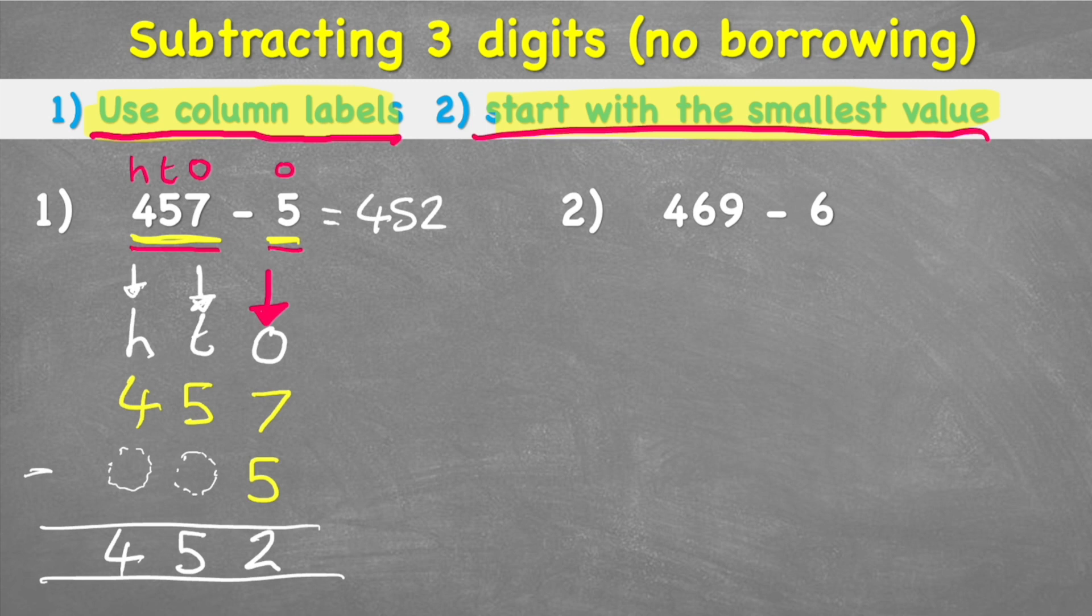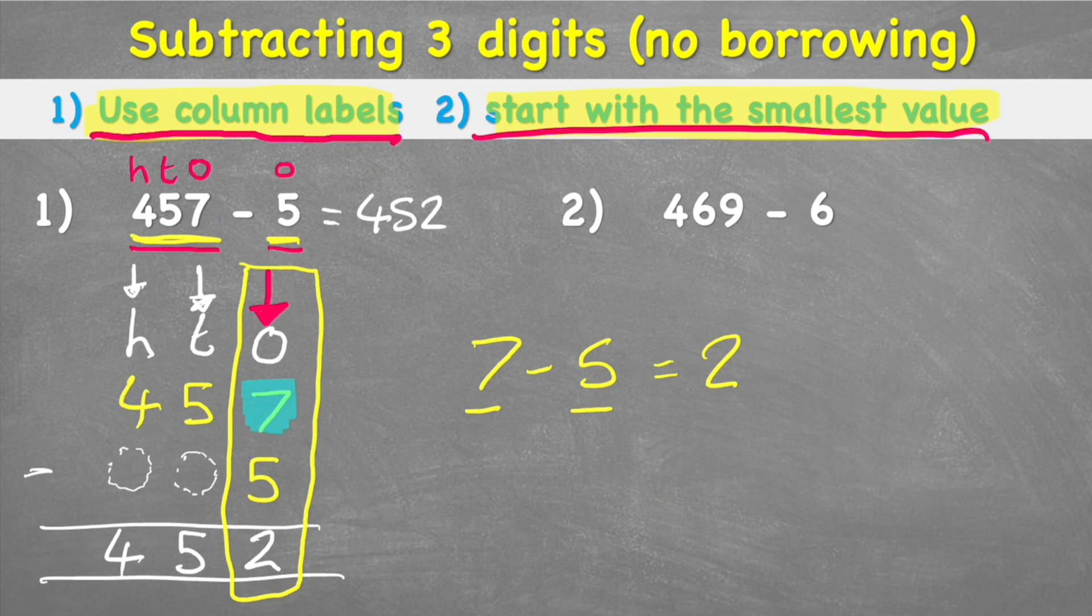Okay, I just want to show you something really important at this point. So let's look at our first question here, which we agreed was seven subtract five, and we thought it equaled two. Now why did we start with the seven and put the five second? Well, that's because the seven is the number on top, so therefore we're taking five away from seven. So our question must be seven subtract five, because if we flipped it around and did five subtract seven, well that gives us a totally different number to two.